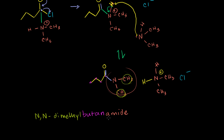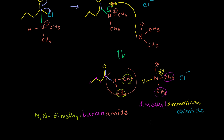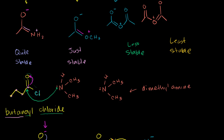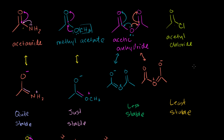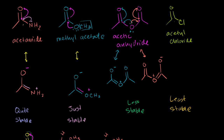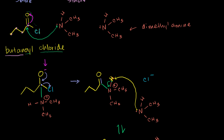So we end up with N,N-dimethylbutanamide, which is an amide — one of the most stable carboxylic acid derivatives. And then this salt: this right here is dimethylammonium — we get that from the fact that we have four bonds and a positive charge. And then we have the negative anion — dimethylammonium chloride. I really just wanted to show you a mechanism here of how you could go from one of the least stable carboxylic acid derivatives to one of the most stable, going from an acyl chloride — which butanoyl chloride was — to an amide.